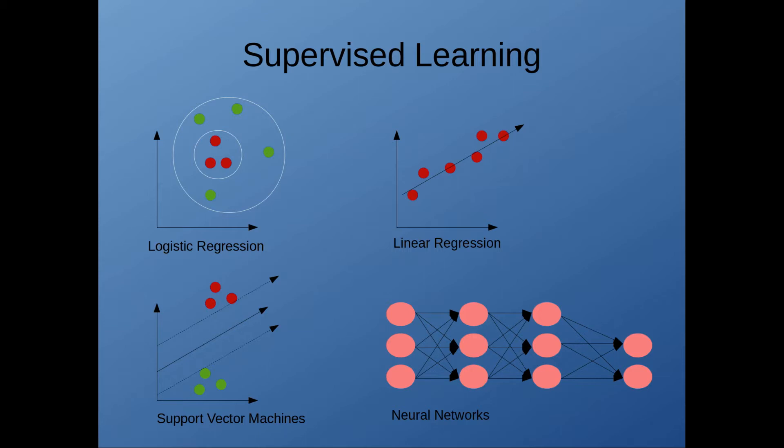You also have what are called support vector machines, which are another mechanism for classifying things into different groups. These have kind of fallen out of vogue in recent years, although they are still useful. Basically, it defines a hyperplane in that higher-dimensional space, and everything falling on one side belongs to one class. Everything falling on the other belongs to another.